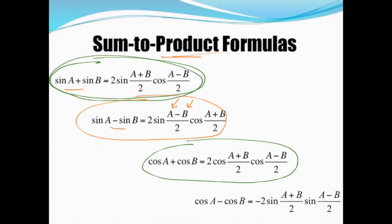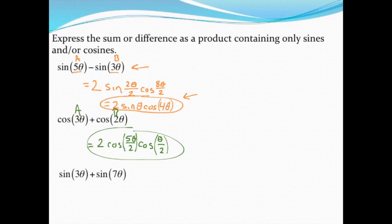Let's get our A and B values plugged in and then simplify. Applying that formula to write this as a product, I would have 2 times the sine of A plus B, so that's 10θ over 2, and then times the cosine of A minus B.